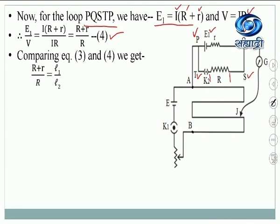Comparing equation 3 and equation 4: equation 3 was E1 by V equal to L1 by L2, and equation 4 gives E1 by V equal to (R + r) upon R. So comparing these two equations we get (R + r) upon R equal to L1 by L2.